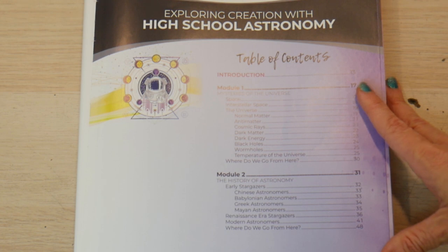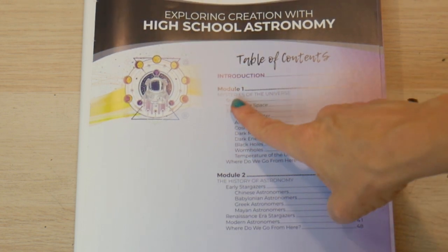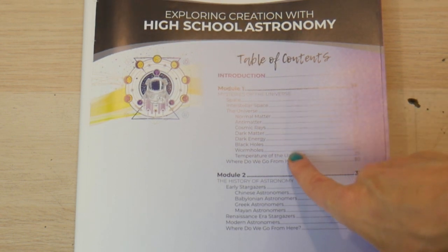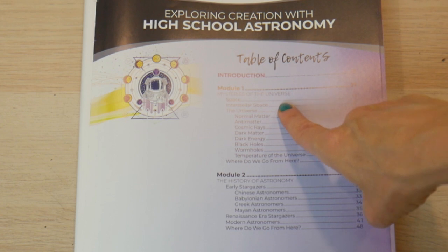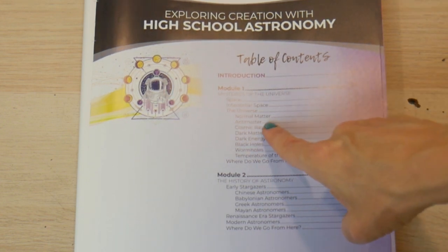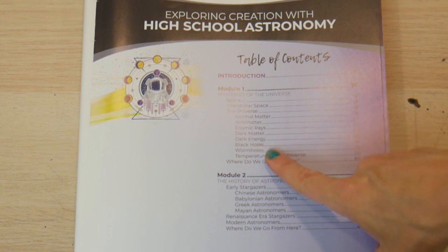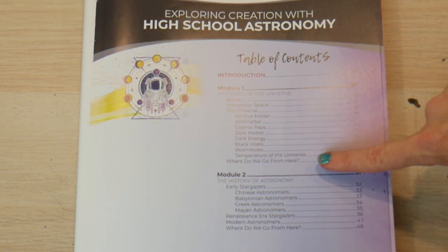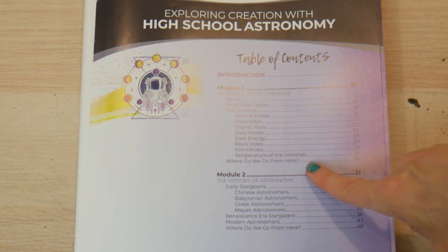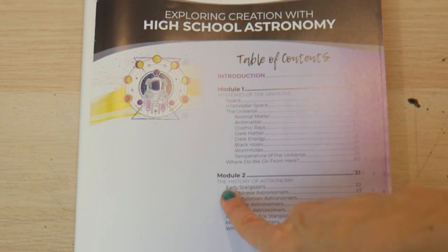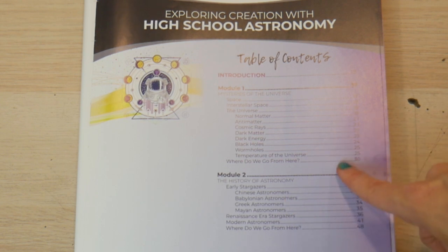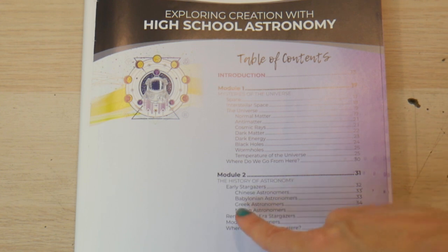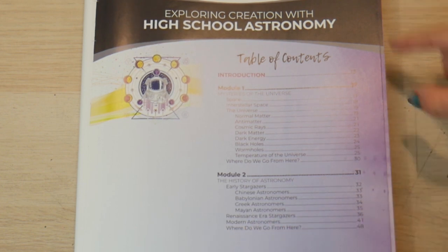It has a total of 14 modules and each one has a different topic. The mysteries of the universe is such a great chapter because it introduces you to all these really cool things in the cosmos: normal matter versus antimatter, cosmic rays, dark matter, dark energy, black holes, wormholes, the temperature of the universe, and where do we go from here. This is such a beautiful introduction and I actually absolutely loved it. But then it goes into the history of astronomy, which a lot of books don't really get into, but I think it's really important to see how astronomy progressed through the ages. I love how they talk about the Chinese, the Babylonians, the Greeks, the Mayan, and then the Renaissance.